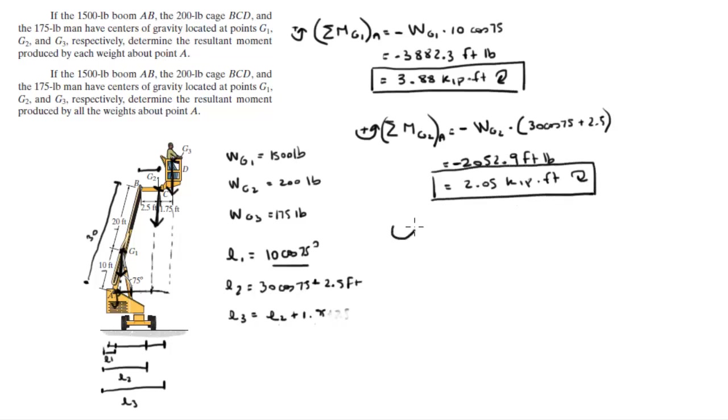The third moment, assuming counterclockwise is positive, that G3 creates about A is equal to negative again - WG3 times the arm, which is L2, which is 30 cosine of 75 plus 2.5 plus 1.75 feet. It comes out to be 2102.5 foot-pounds negative, or 2.1 kilopounds per foot going the clockwise direction.